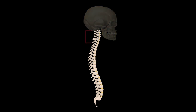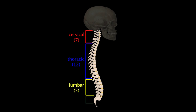These are arranged in five regions along its length. There are seven cervical vertebrae, 12 thoracic, five lumbar, five fused segments make up the sacrum, and four fused segments typically make up the coccyx.